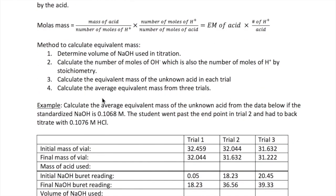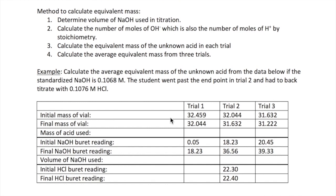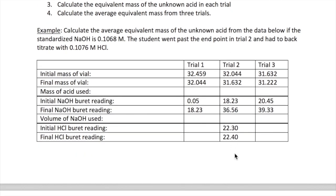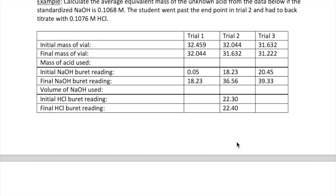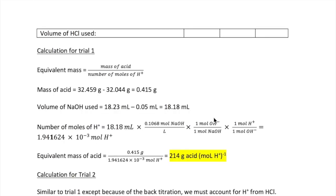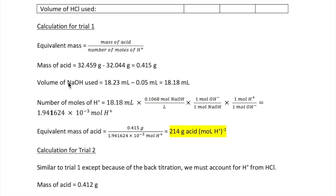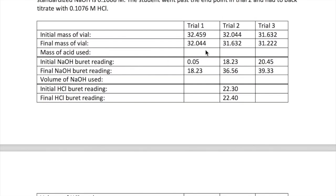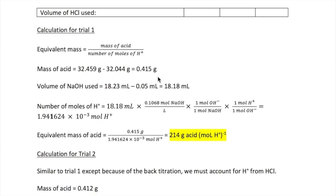Okay, let's now work through an example of calculating equivalent mass from your titration data. So here, a student had gotten his NaOH standardized to 0.1068 molar, then used that to titrate his unknown acid three times. In trial two, he was forced to do a back titration using 0.1076 molar HCl. So let's see how we can get the equivalent mass for trial one. Remember that equivalent mass is just the mass of acid divided by the number of moles of protons. To get the mass of acid, we just subtract the first two numbers on this table, giving us 0.415 gram acid.